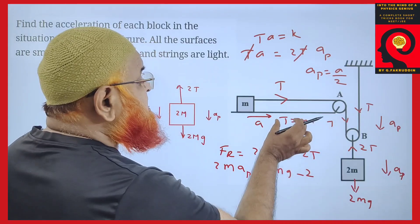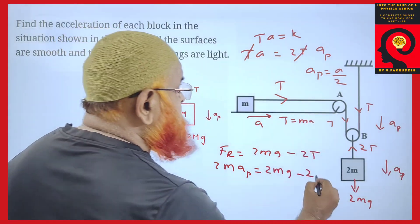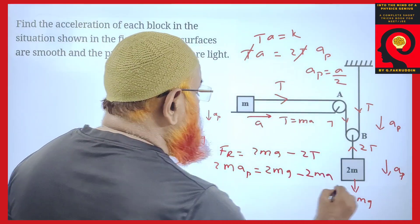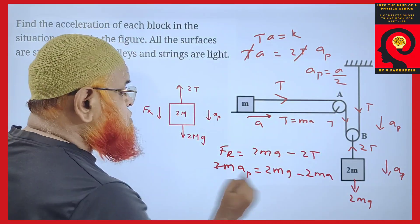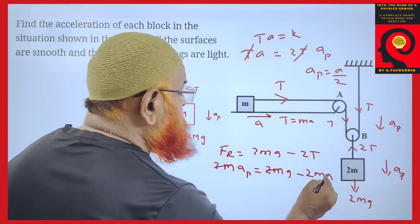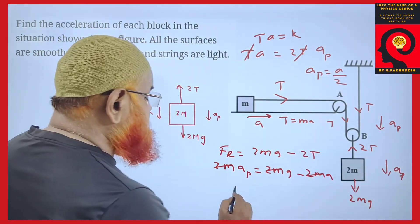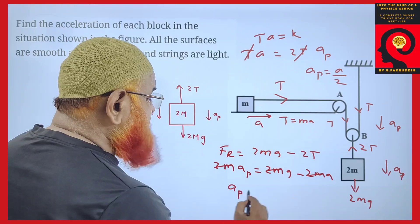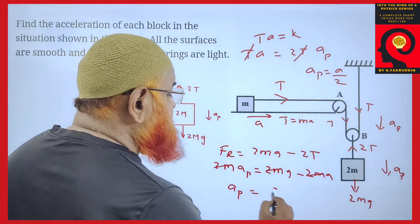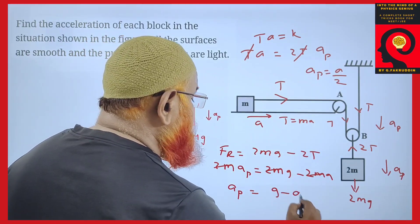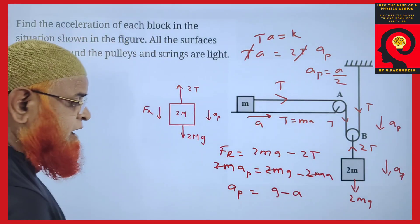So the equation becomes: 2M times AP equals 2MG minus 2T, and T is nothing but MA. Substituting and simplifying, 2M cancels, so acceleration of the pulley is G minus A.